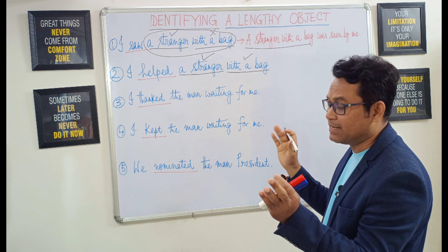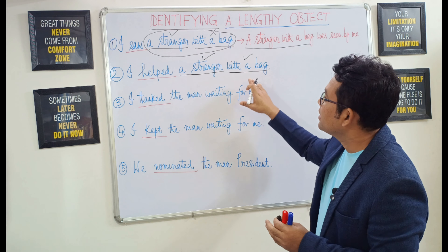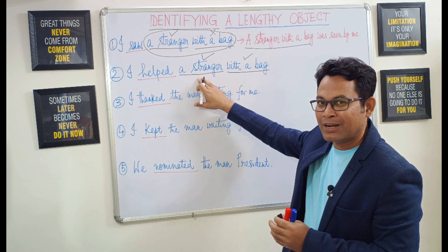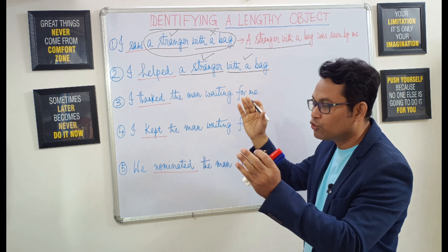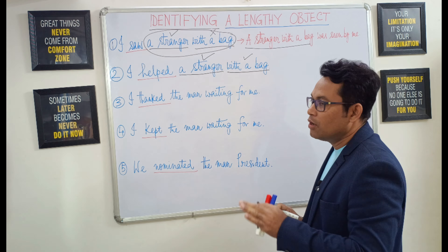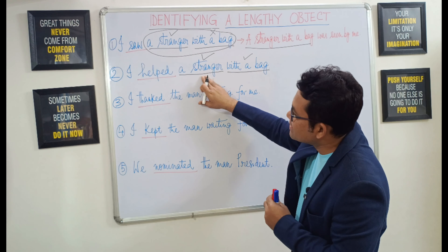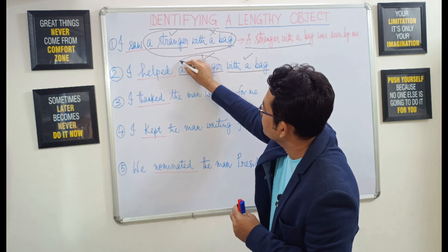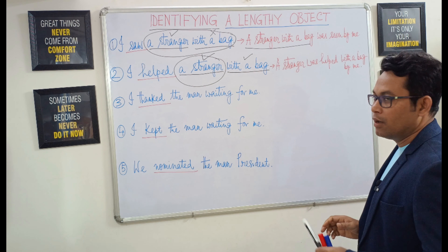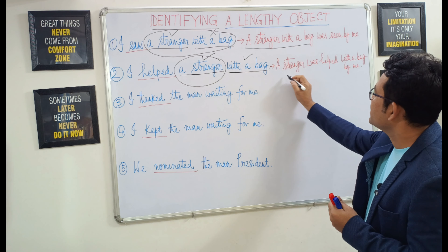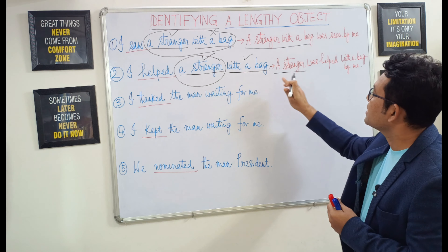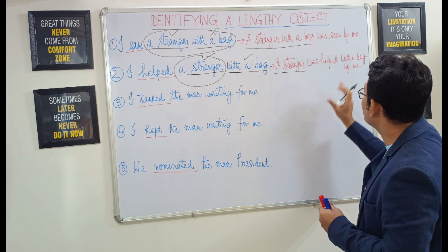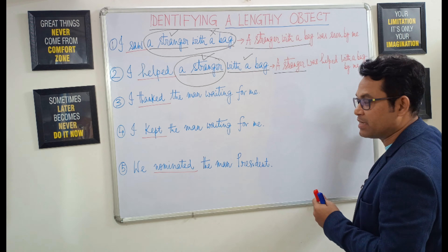We must not keep them together — they should be kept separated. The logic is that an adverb phrase cannot qualify a noun or a noun phrase, and therefore they should not be put together. So only the noun phrase 'a stranger' is the object in this sentence. The passive voice will be: 'A stranger was helped with a bag by me.' So 'with a bag' gets separated.